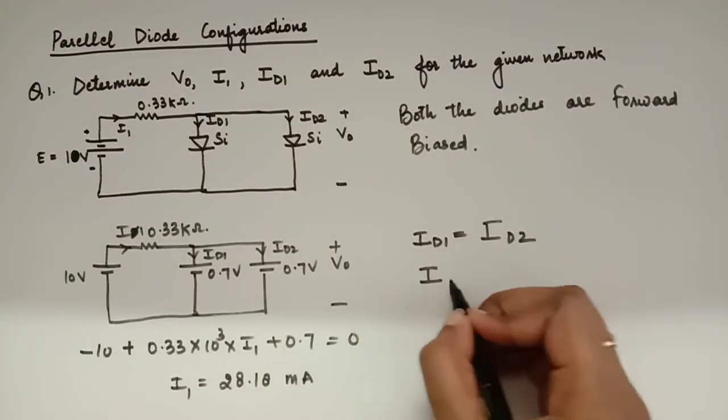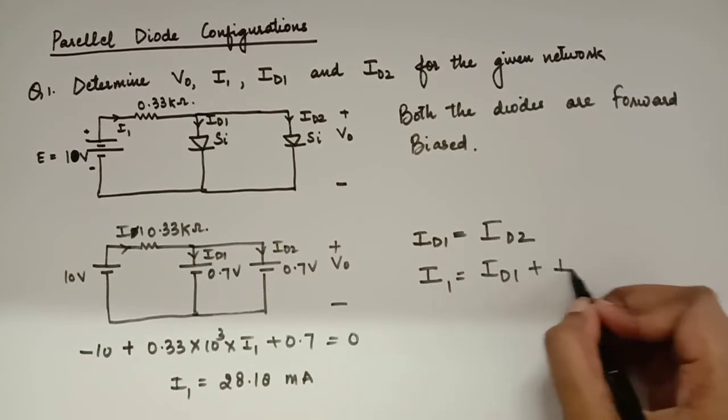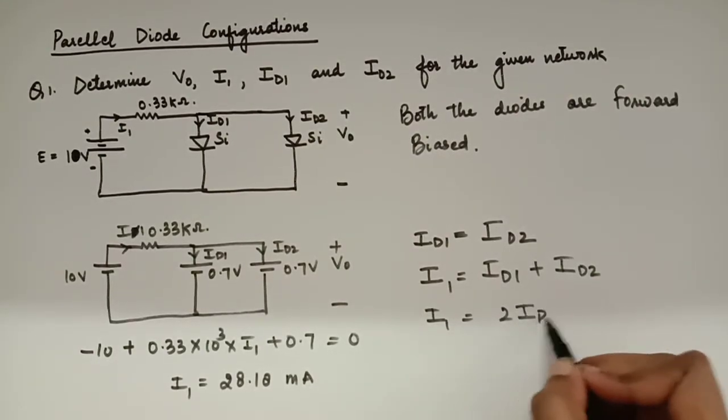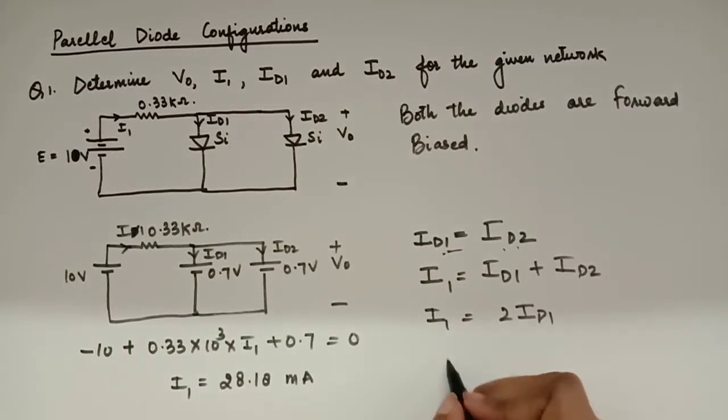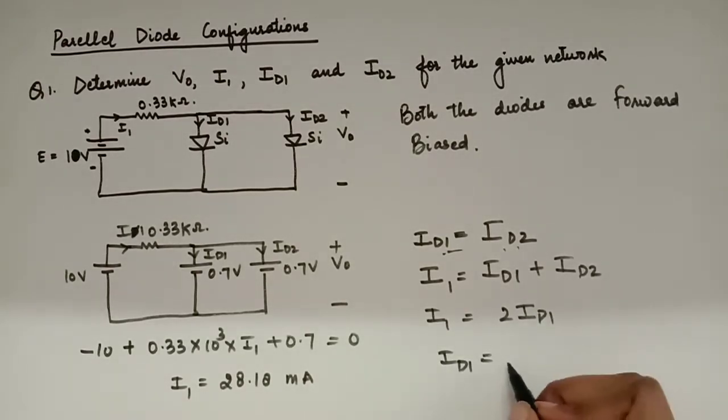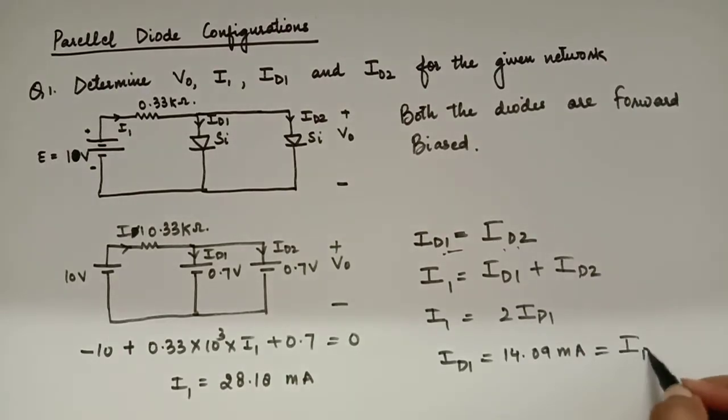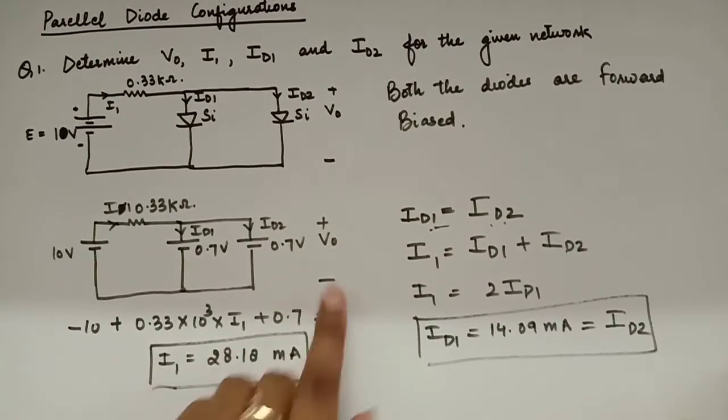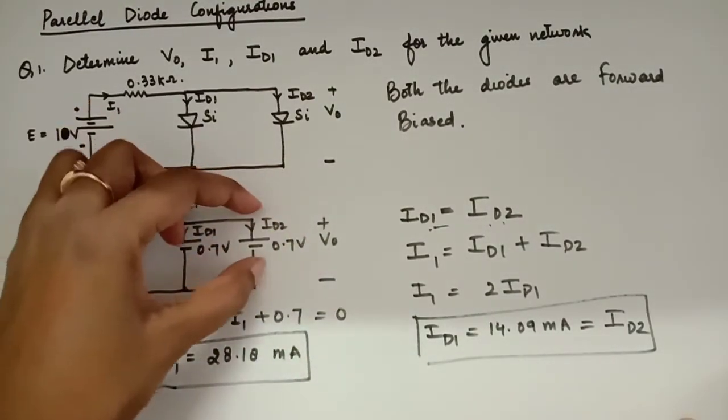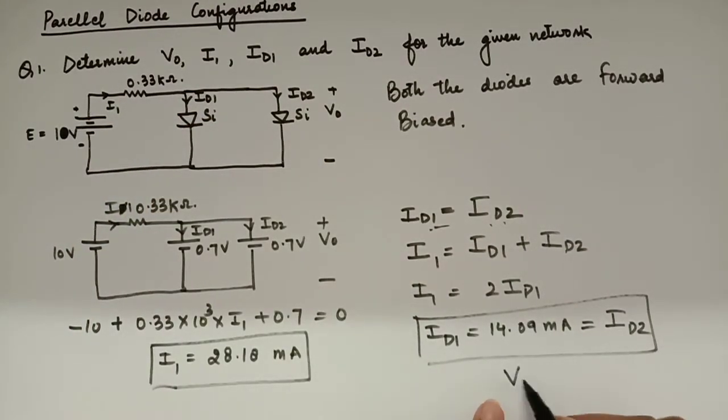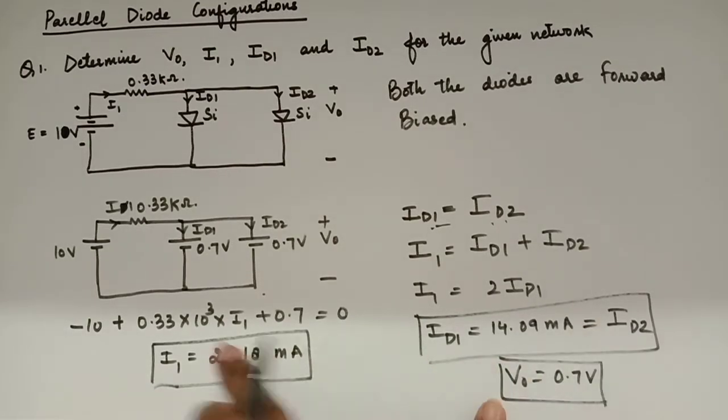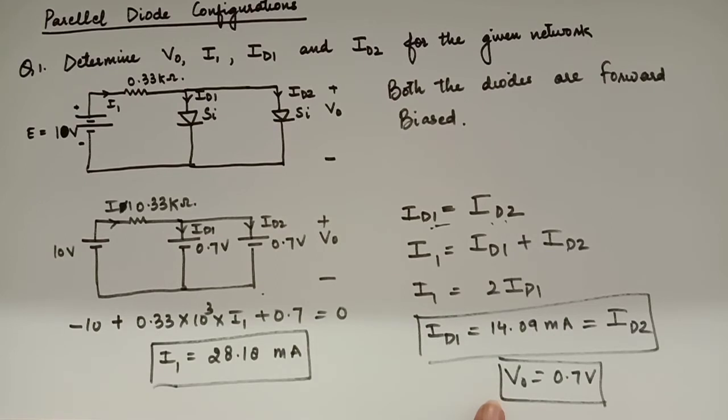ID1 will be equal to ID2. And we know that I1 is the sum of ID1 and ID2. It has been divided into two parts. And when both are same, that means you can just have this because both are equal. You can replace ID2 by ID1. And you will get ID1 as 14.09 milliampere. And which is same as that of ID2. So, you have calculated ID1, ID2 and I1. Now, only the thing that is left is V0. In parallel, voltages are same. That means whatever voltage is there in this branch, same as the V0. And you can easily see that the voltage in this branch is 0.7V. So, V0 is 0.7V. So, I think we have calculated all the four parameters. And this is how we solve the numerical. So, I hope you may find it easy.